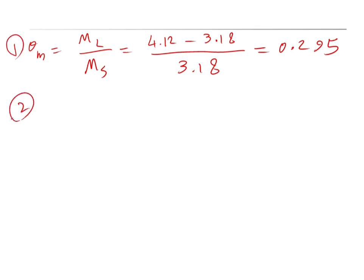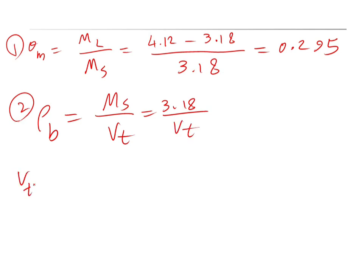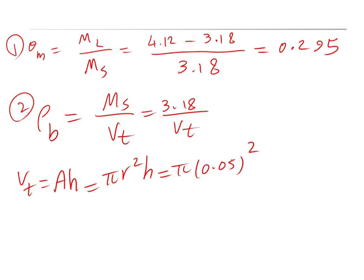For part two, bulk density rho b equals ms divided by total volume. The total volume of a cylinder equals pi r squared times height. The radius is 0.05 m (since diameter is 0.1 m), and height is 0.3 m. So Vt equals pi times 0.05 squared times 0.3, which equals 2.35 times 10 to the minus 3 cubic meters.